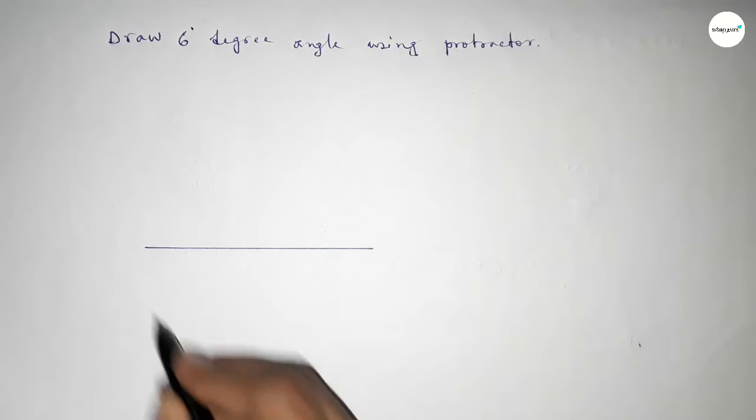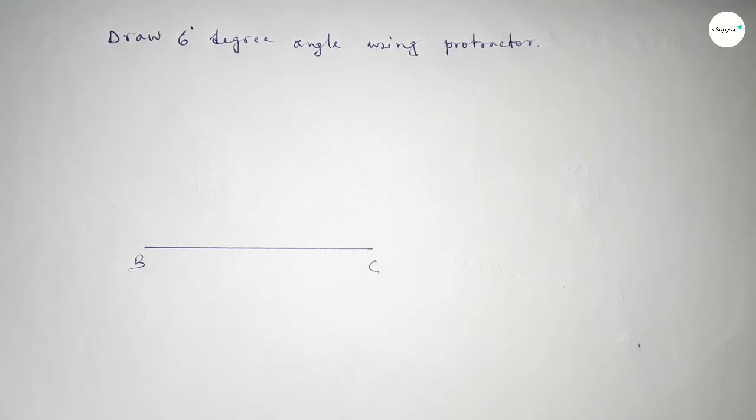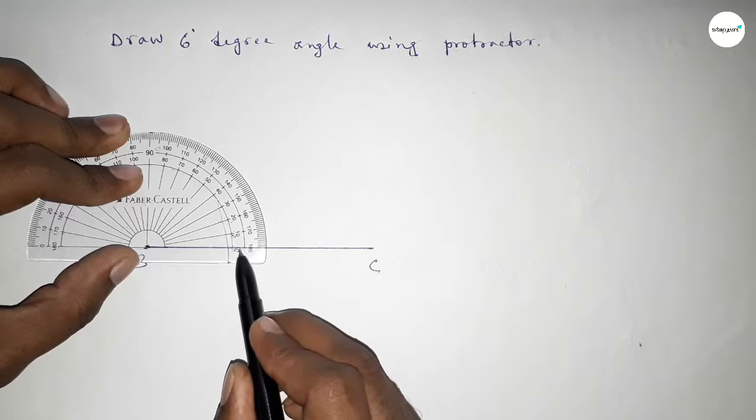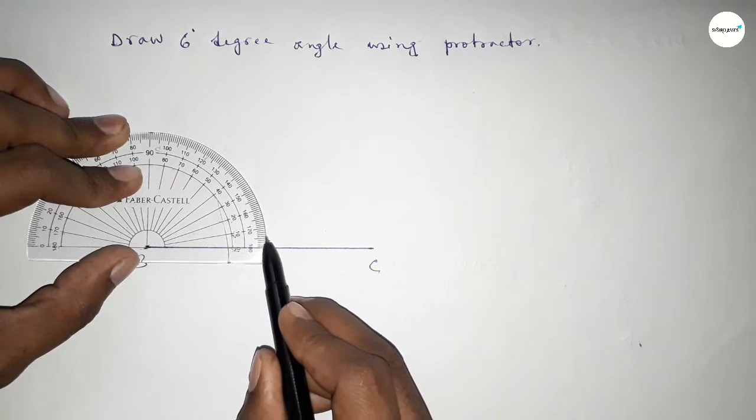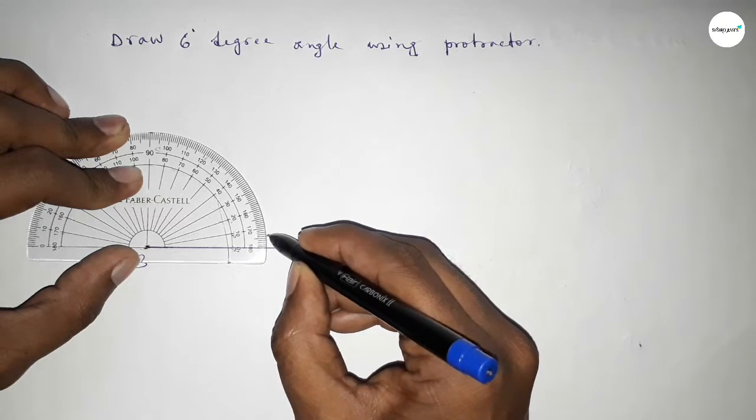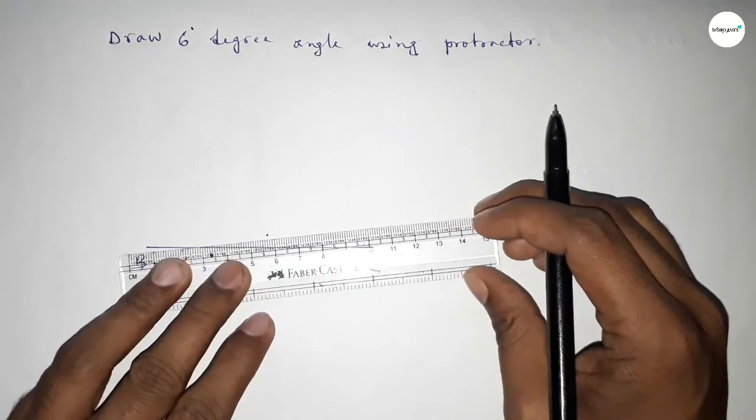Draw a line of any length and take here B point and here C point. Now put the protractor on point B and count six degrees. Start at zero, one, two, three, four, five, six. So this is six degrees. Now join this to get six degree angle.